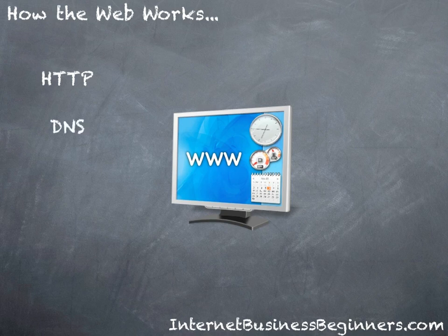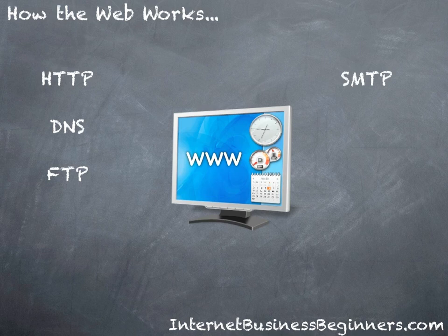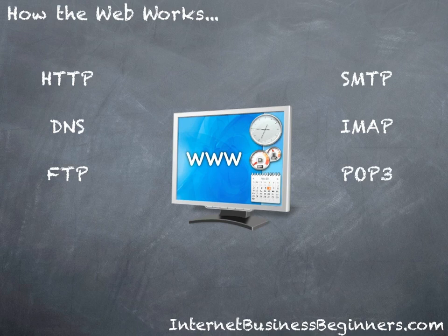There's domain name services, and this is what takes a domain like internetbusinessbeginners.com and translates it into an IP address, which is where your server is actually located on the internet. There's file transfer protocol, and this is how you, as a web developer, would take your images, your audio, your flash, and push it up onto a server. Related to that is the email side of things — emails being sent out all use the simple mail transfer protocol. When you want to retrieve them from the server, you have a few options; the most common ones are Internet Messaging Access Protocol and Post Office Protocol version 3.